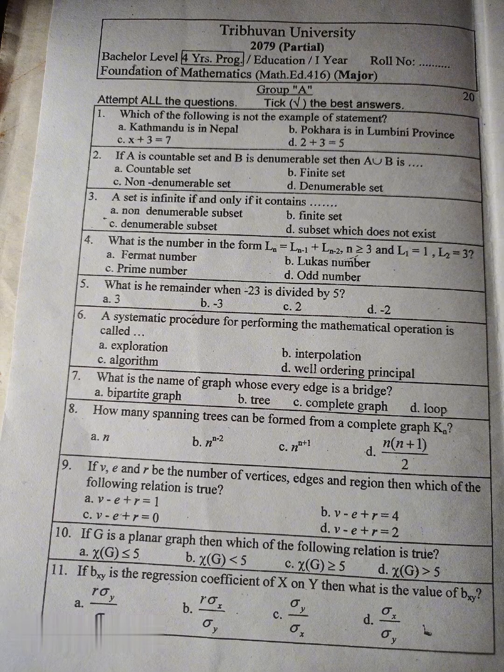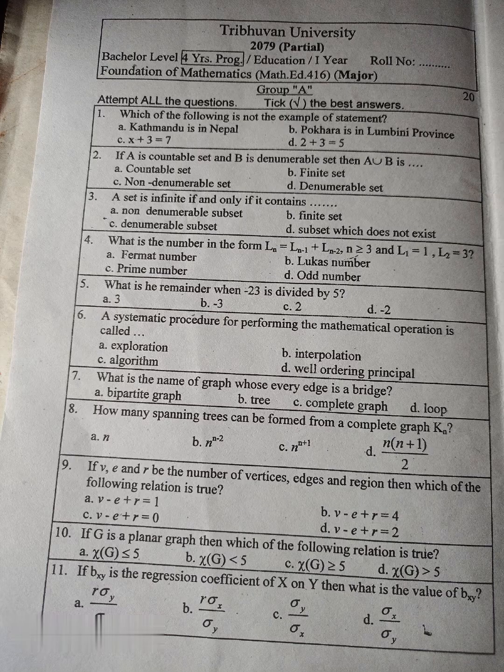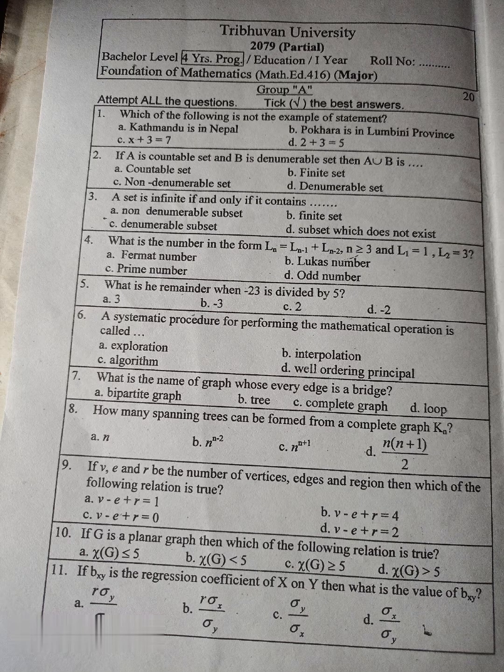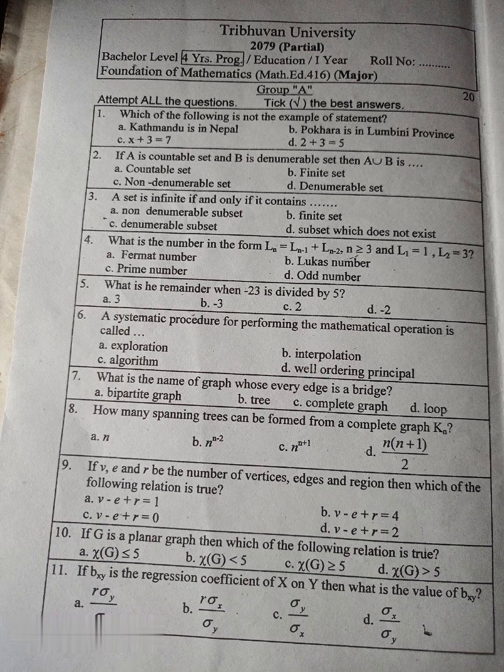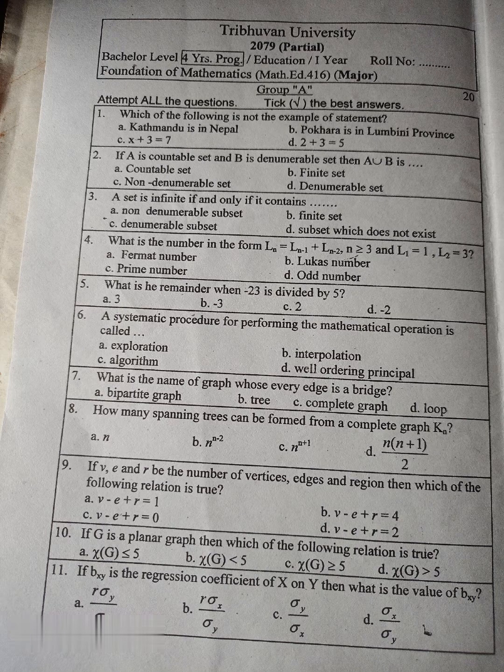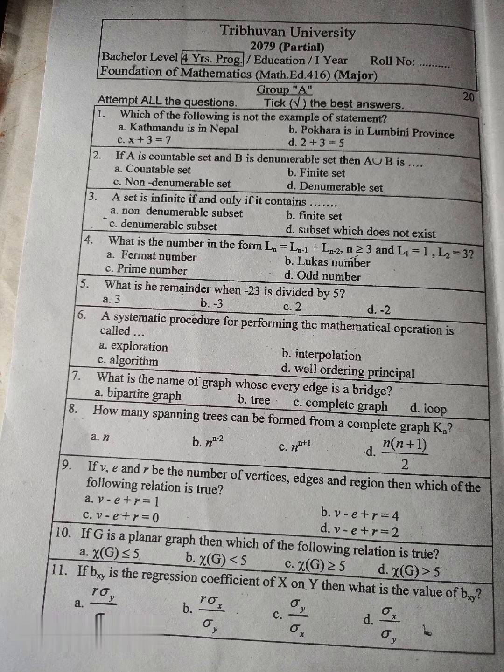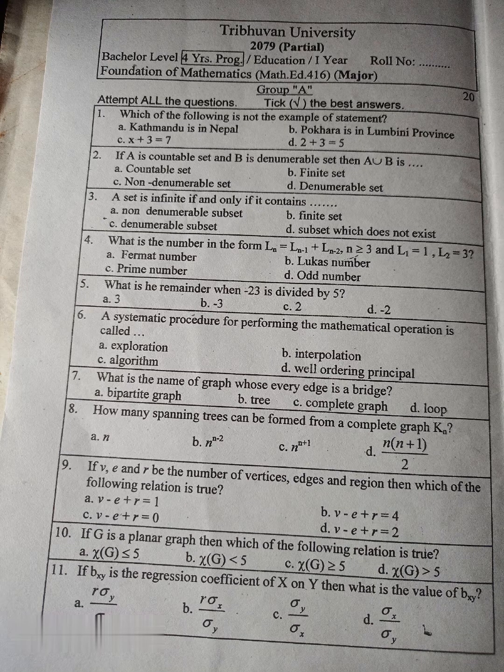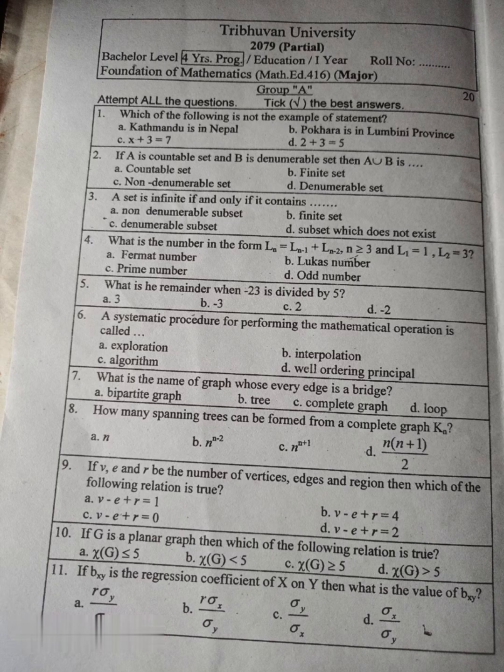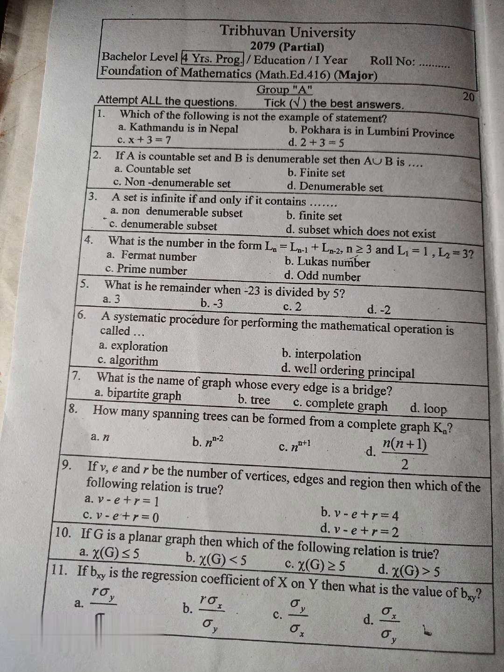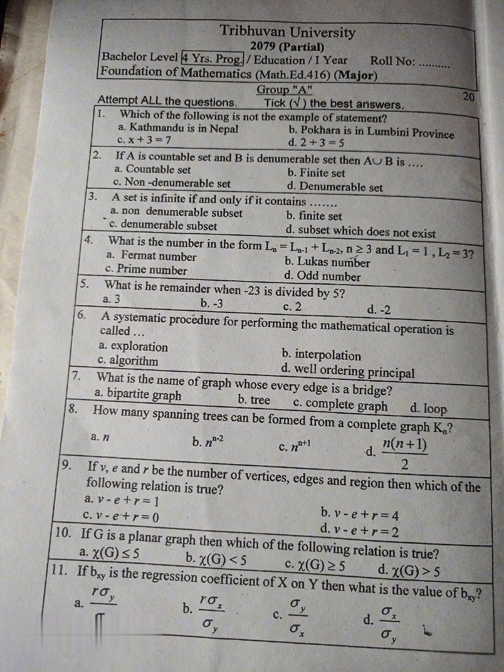Question number 7: What is the name of graph whose every edge is a bridge? A. bipartite graph, B. tree, C. complete graph, D. loop. Question number 8: How many spanning trees can be formed from a complete graph Kn? A. N, B. N power N minus 2, C. N power N plus 1, D. N into N plus 1 upon 2.